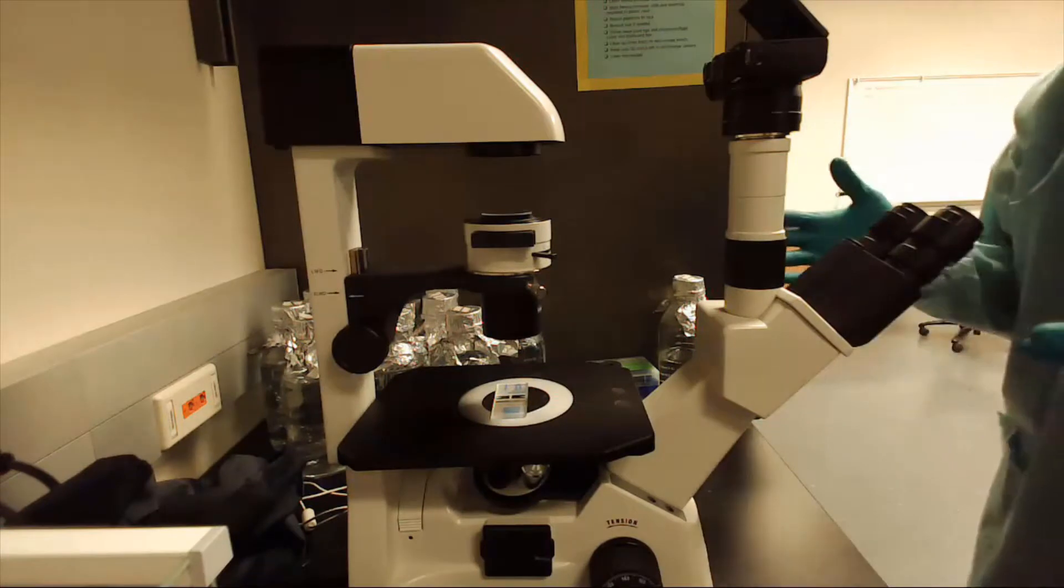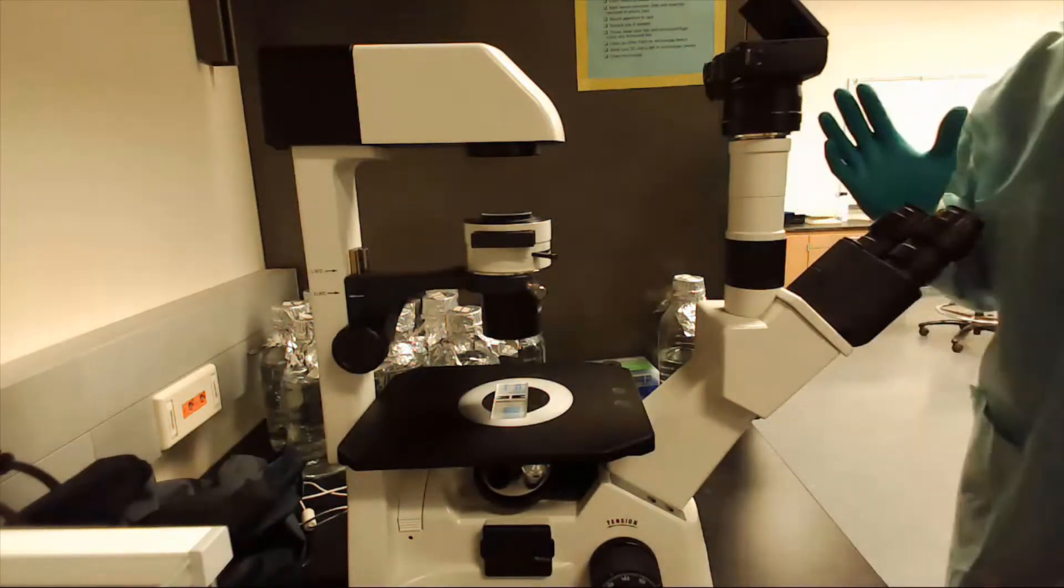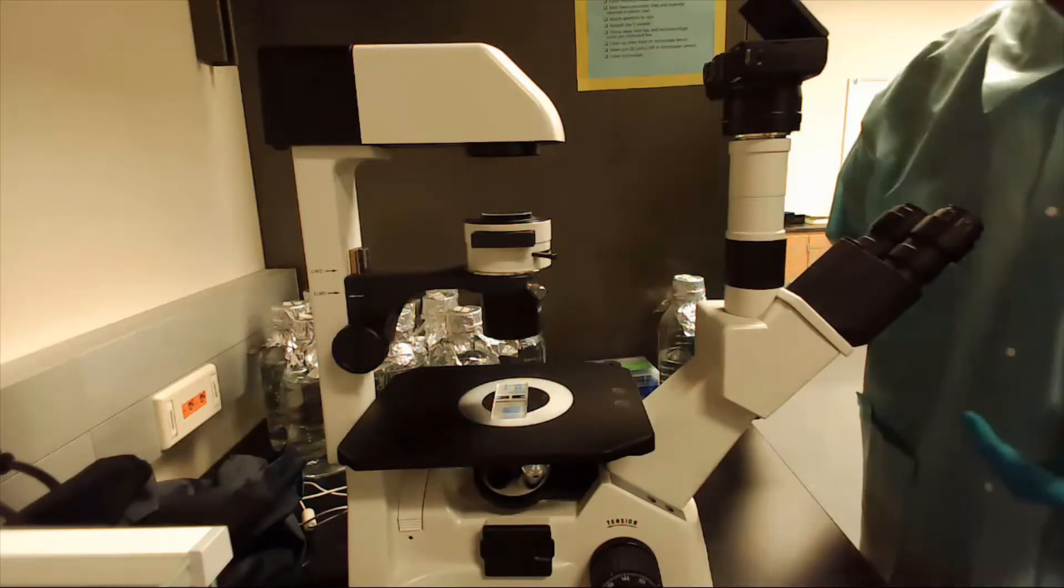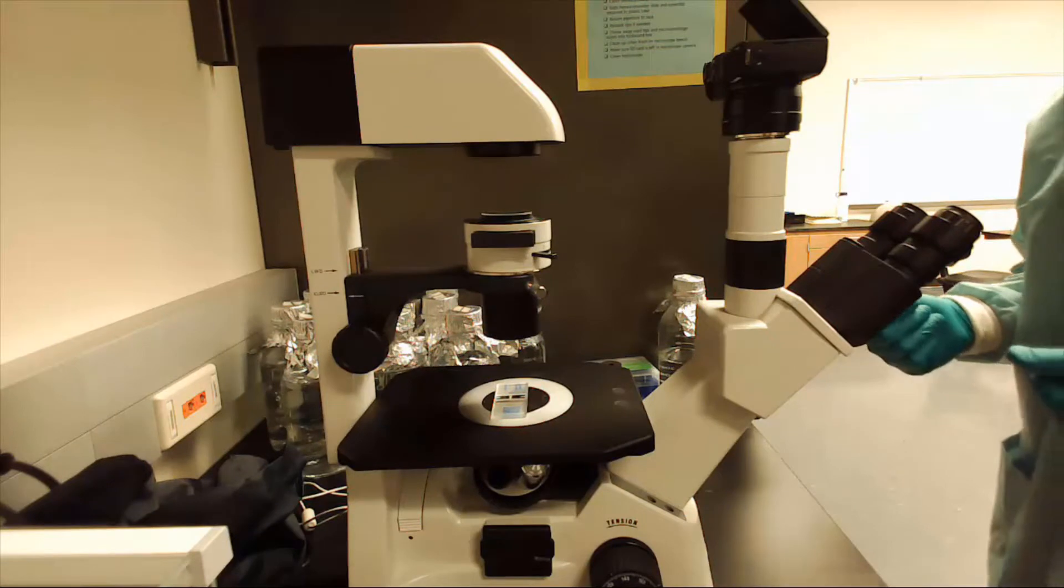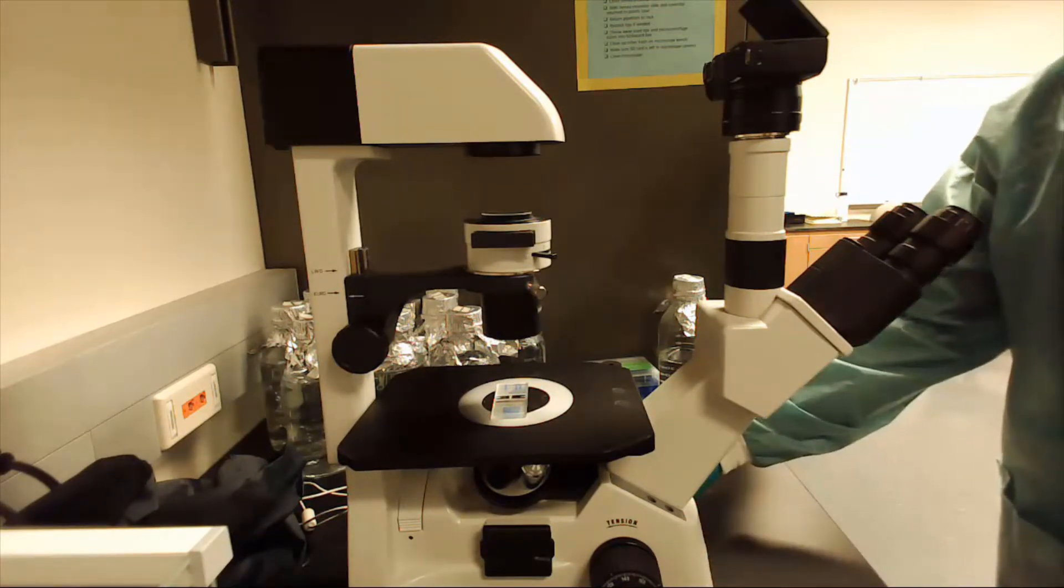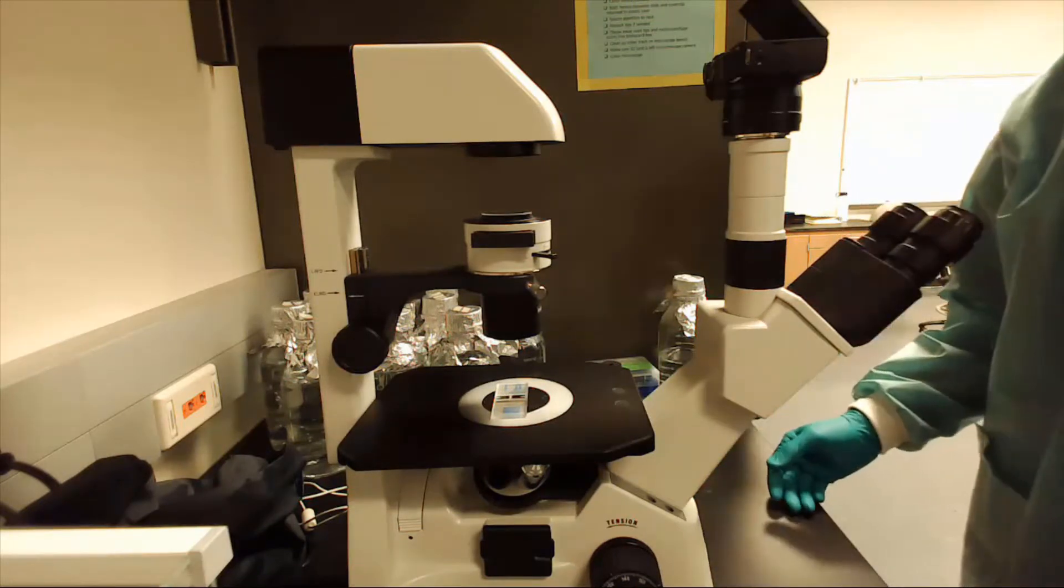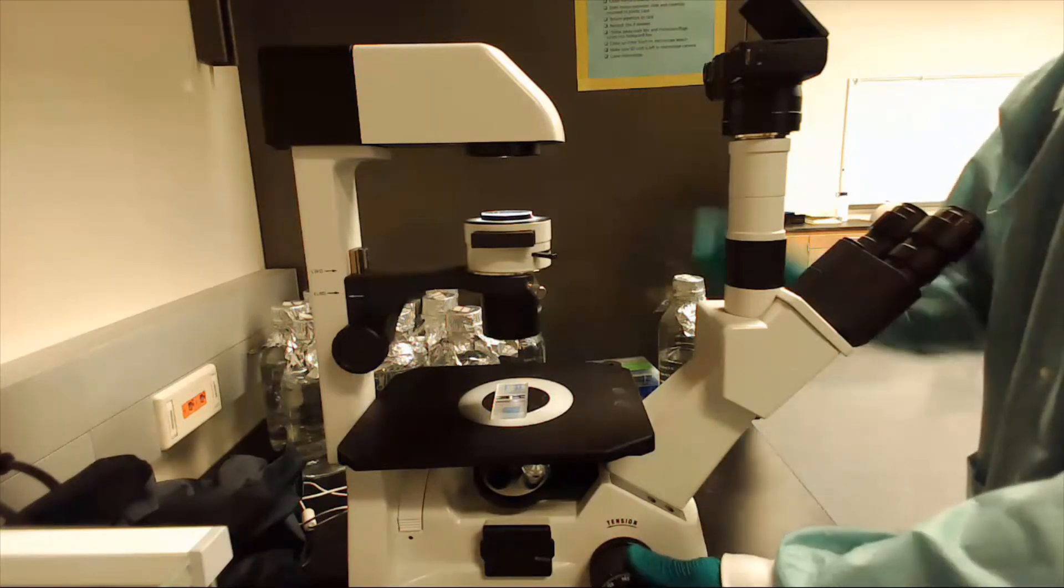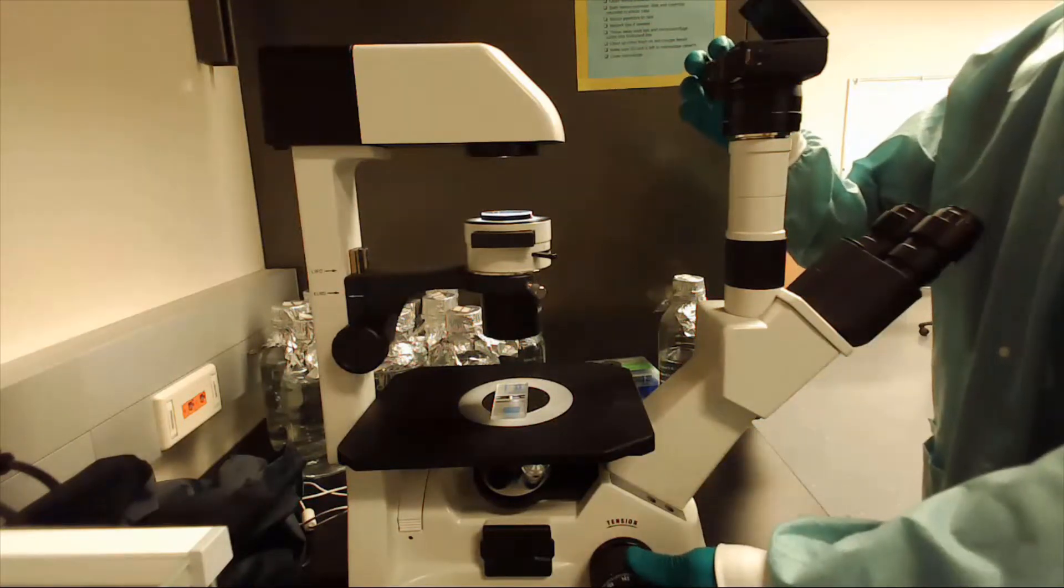Before we use the microscope to look at our cells, I want to show you how we make sure it's set up correctly. We talked about setting up a microscope for Kohler illumination in BME 214L, and so I'm going to show you how that actually looks for real. So to do that, we're going to go ahead and use the hemocytometer slide, which I already put on the microscope, and I'm going to go ahead and turn on the microscope.